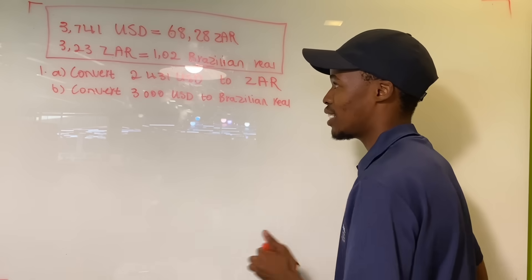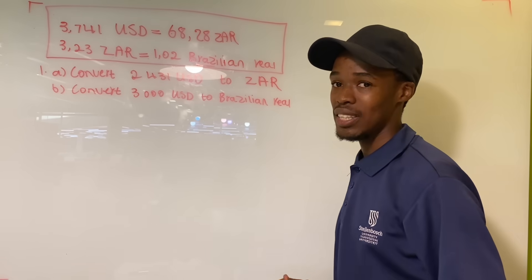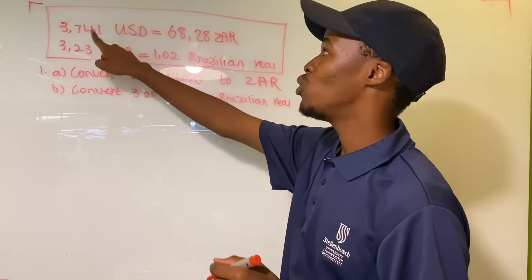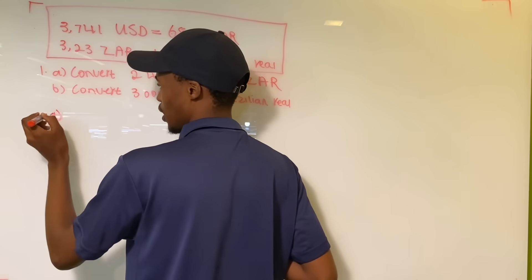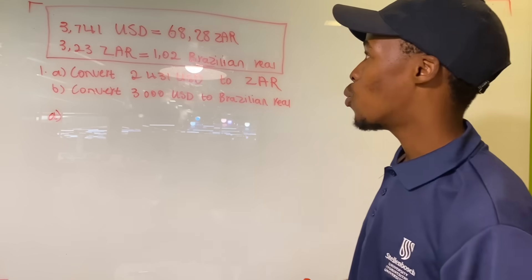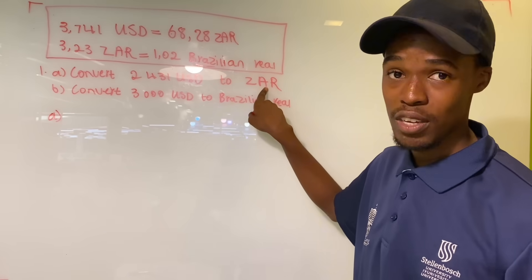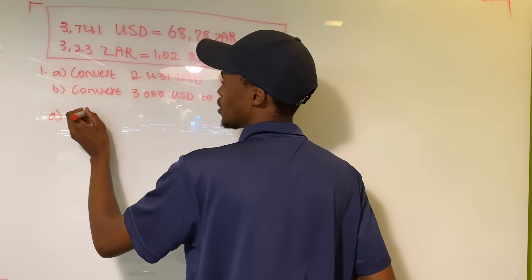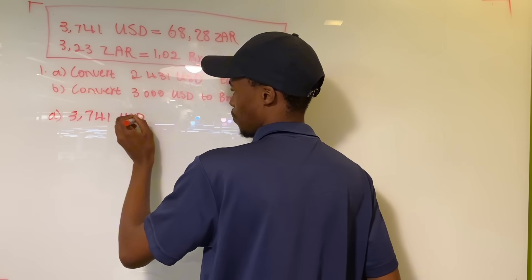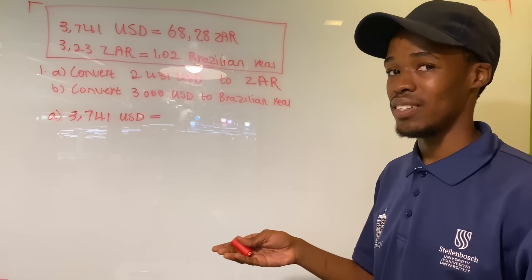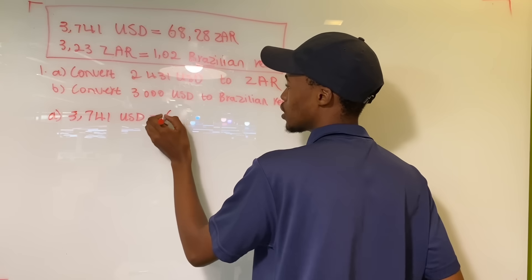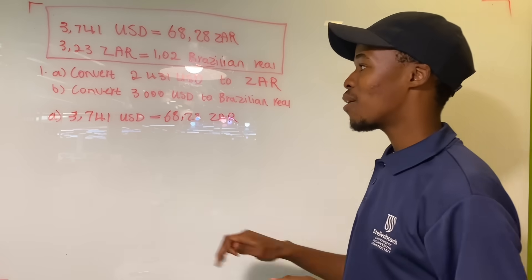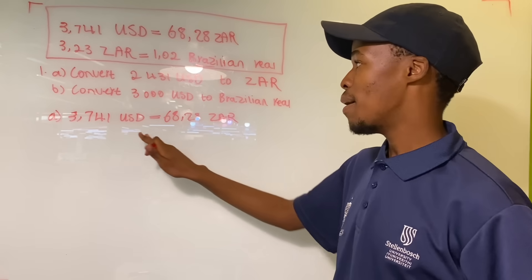The question says convert 2431 US dollars to South African rands. To do that, you're going to use the information provided. Since we're dealing with USD and South African rands, we use the rate that tells us 3.741 USD equals 68.28 South African rands. That is the information we've been given.